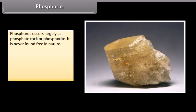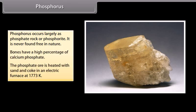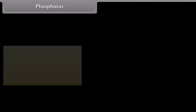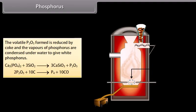Phosphorus occurs largely as phosphate rock or phosphorite and is never found free in nature. Bones have a high percentage of calcium phosphate. The phosphate ore is heated with sand and coke in an electric furnace at 1773 Kelvin; the volatile P2O5 formed is reduced by coke and phosphorus vapors are condensed underwater to give white phosphorus.